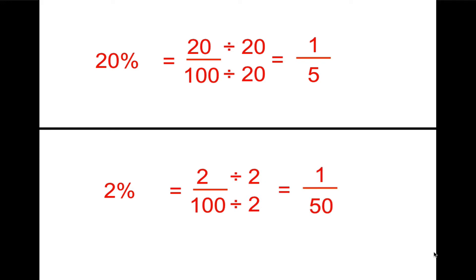Why don't you try these two and then check back with me. 20% equals 20 hundredths. This can be reduced by 20, and we're going to get 1 over 5. 2% equals 2 over 100, and this can be reduced by 2, so we're going to get 1 over 50.